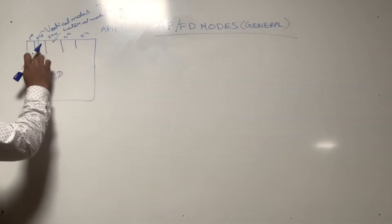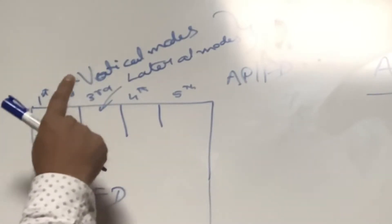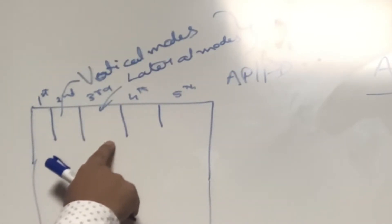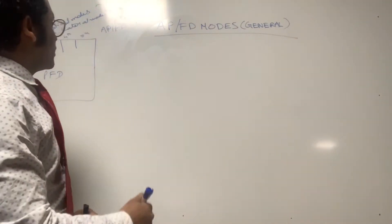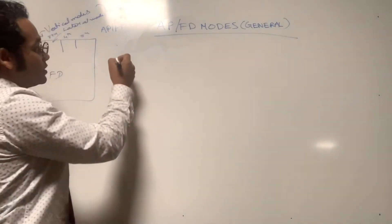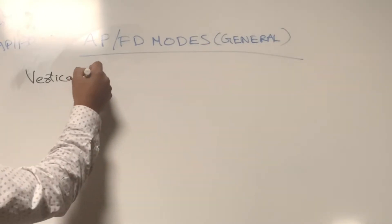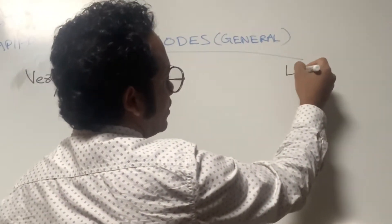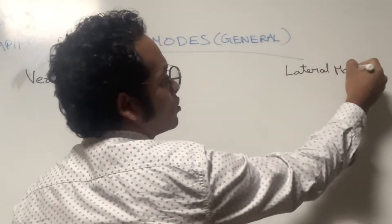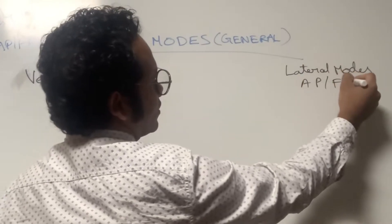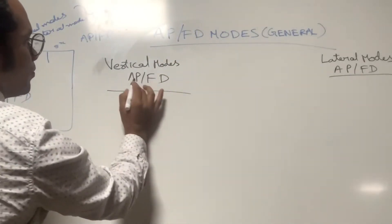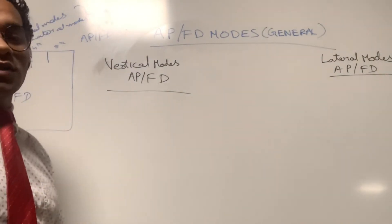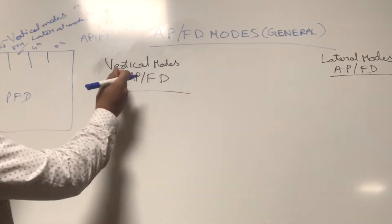We will be discussing what all FMAs can appear in the second column and what all FMAs can appear in the third column. The second column is for all the vertical modes and the third column is for all the lateral modes. Let's begin with the vertical mode FMAs for autopilot flight director in the Airbus A320.